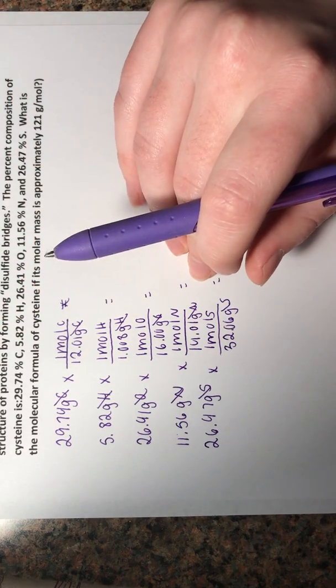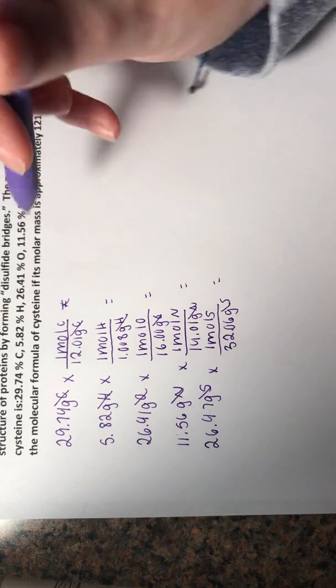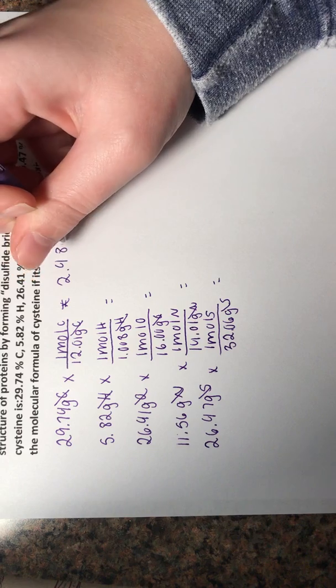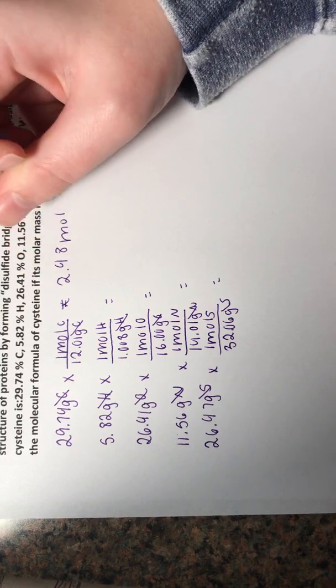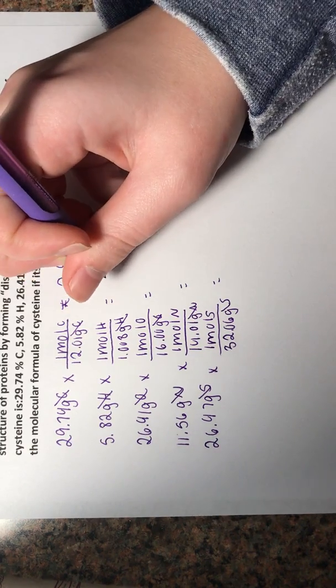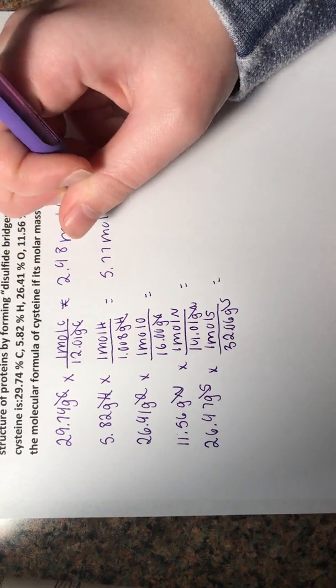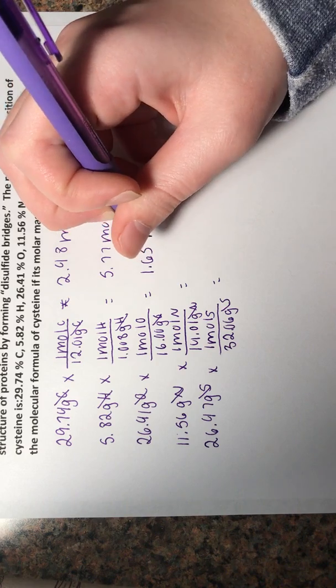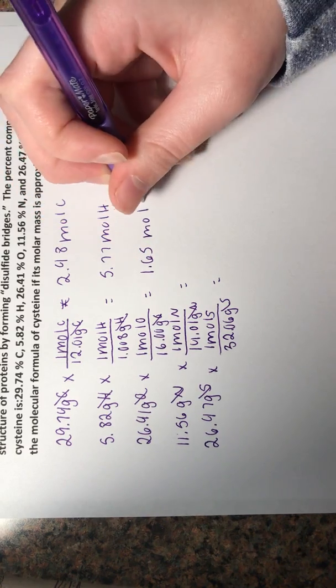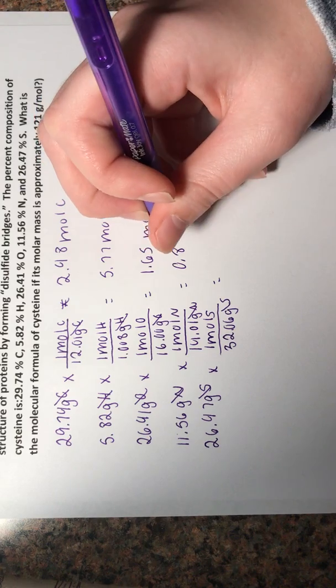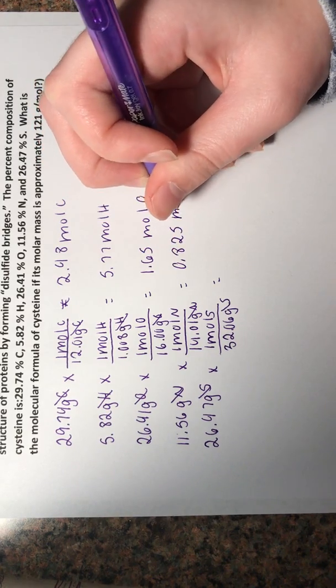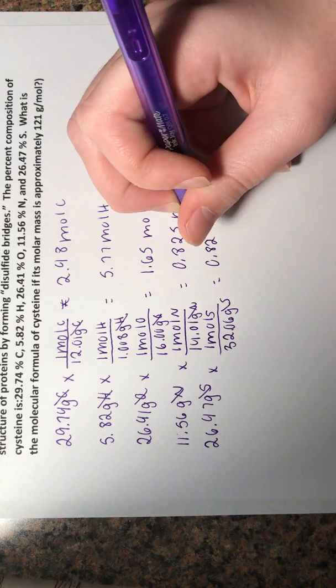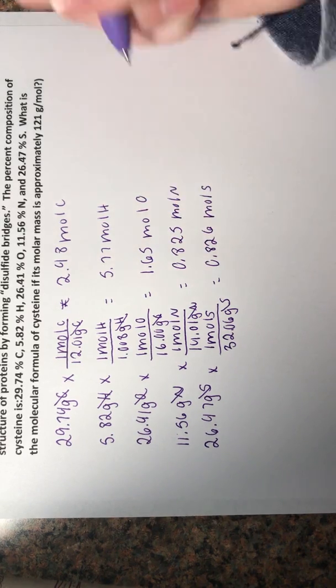Including our significant figures, which is three. After dividing, we've got 2.48 moles of carbon, and we've got 5.77 moles of hydrogen, 1.65 moles of oxygen, and 0.825 moles of nitrogen, and 0.826 moles of sulfur.